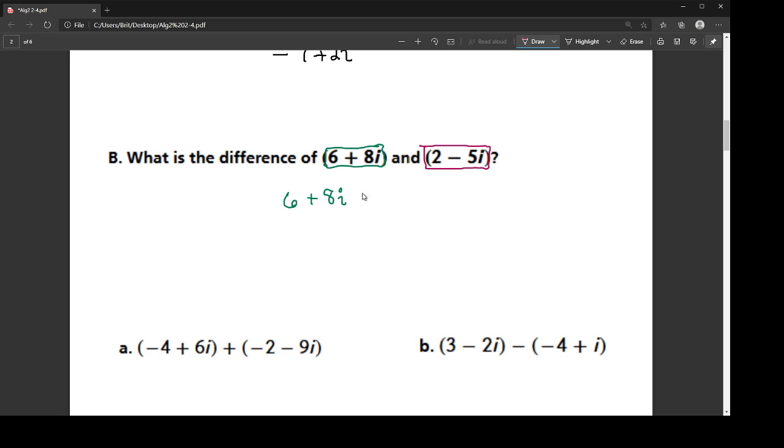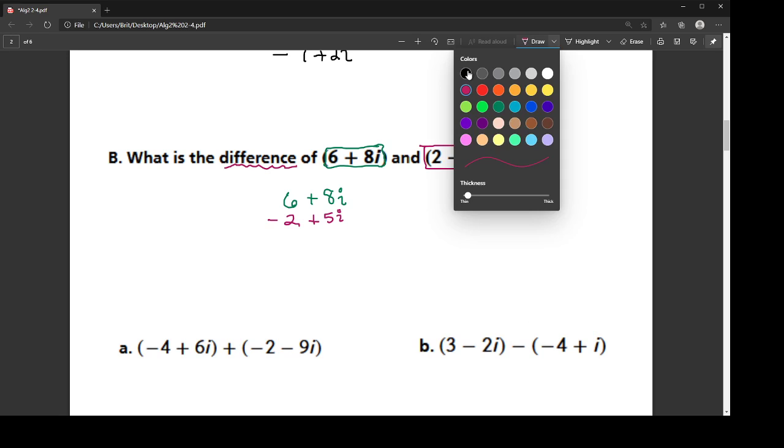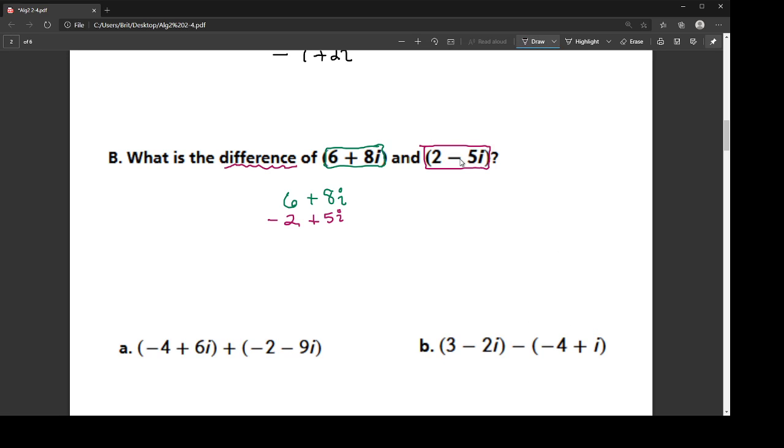So when I go to write this under here, instead of writing just 2, I'm going to call it a negative 2. Instead of minus 5i, I'm going to call it plus 5i. And again, that's because it's a difference and it's subtracting. This will make more sense when I go to do b. So as long as you remember to change both of the signs in the thing that's being subtracted, you can do it the same way as you did with addition.